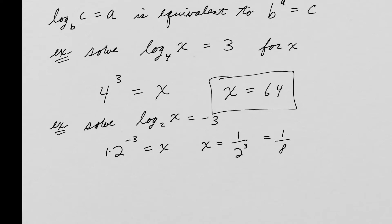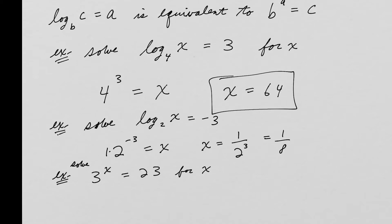We can go the other way too — converting an exponential problem to log form to solve. For example, 3 to the x equals 23: putting this in log form gives log base 3 of 23 equals x. That's the exact answer. You'd use a calculator if you want an approximation.